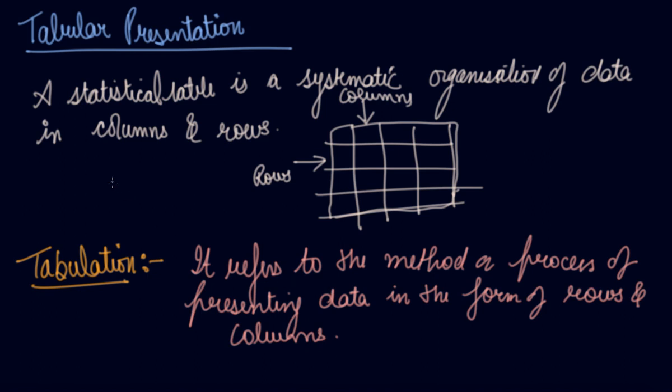Whereas table is the actual presentation of data in the form of rows and columns. Table is the consequence of tabulation. Tabulation is the process how you draw a table and table is the consequence of the tabulation.